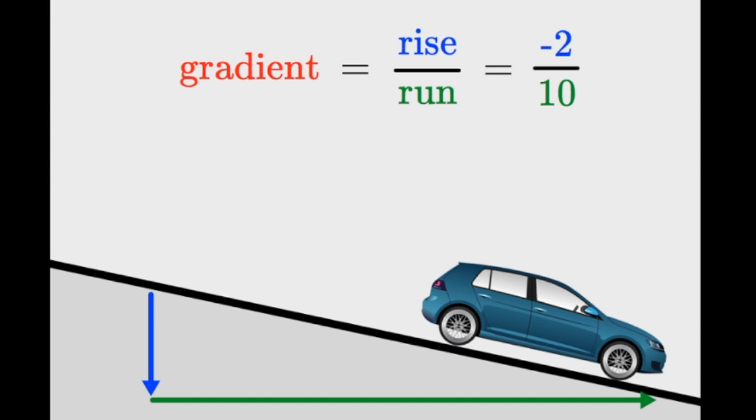Finally, let's do the calculation. Gradient is equal to rise divided by run. In this case, that's negative 2 divided by 10, and it comes out as negative 0.2. You can check that on a calculator if you don't believe me.